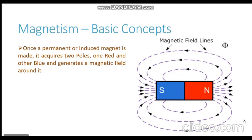Once a magnet is generated — either by using a permanent magnet or by induced magnetism — it acquires two poles, indicated as the red pole and the blue pole. As you can see in this diagram, a bar magnet has these two poles. Along with these poles it also generates a magnetic field around it. The dotted lines extending out of the physical body of the magnet represent the magnetic field of the magnet.